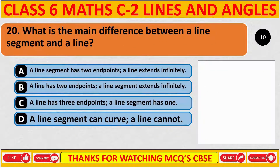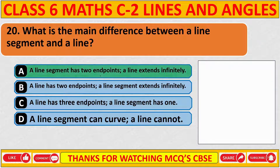What is the main difference between a line segment and a line? The correct answer is A: a line segment has two end points and a line extends infinitely.